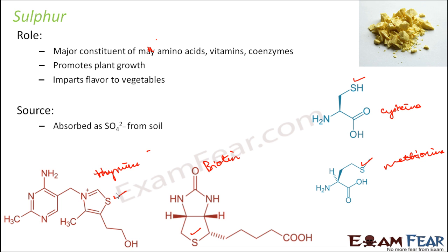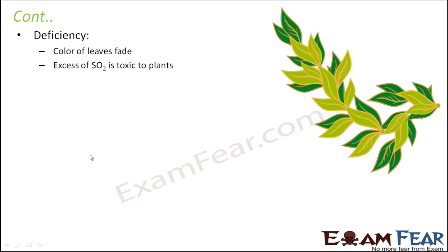Sulphur is absorbed as sulphate from the soil and also as SO2 (sulphur dioxide) from the atmosphere. Deficiency of sulphur can cause fading of leaf color — leaves that were dark green gradually become light green and may eventually turn white. Excess sulphur dioxide, however, is toxic to plants. While sulphur dioxide can be absorbed from the atmosphere within a limited quantity, too much of it can cause harm to the plant.